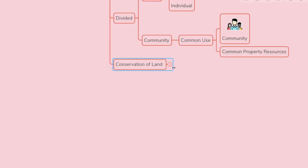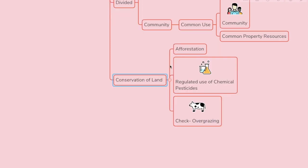Land degradation, soil erosion, and landslides are the major threats to our environment, so we need to protect and conserve our land. For conservation of land: first, afforestation; second, regulated use of chemical pesticides; and we need to keep a check on overgrazing.